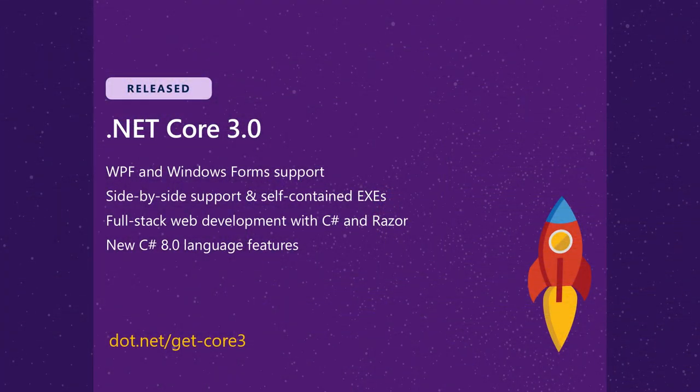Let's talk about .NET Core 3. You can download it right now from the .NET website — the bits are available. It brings a bunch of awesome enhancements: desktop support for WPF and Windows Forms; any .NET Core application can be fully side-by-side and self-contained, meaning .NET doesn't have to be on the machine. We're also introducing a brand new way of building web applications where every web app is a SPA application. And we're always making you more productive with Visual Studio and C#.